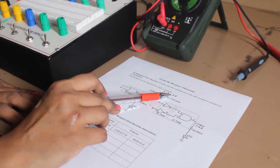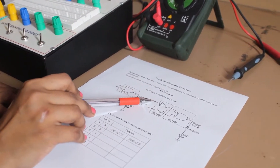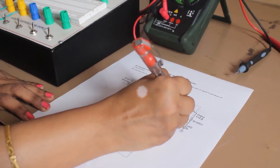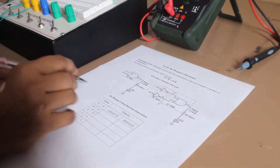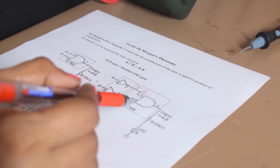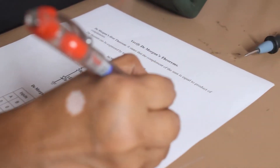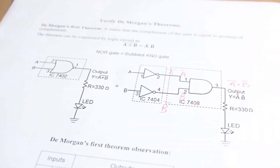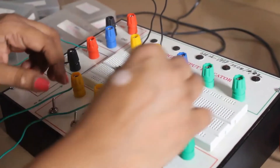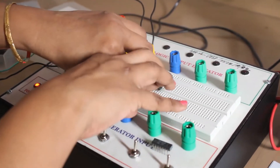For the right hand side, it is A-bar AND B-bar. First, we require the complement of A as well as the complement of B. Inputs A and B are given to NOT gates, so the output is A-bar and B-bar. Then A-bar and B-bar are given to the inputs of an AND gate, which is IC 7408, giving us A-bar AND B-bar.